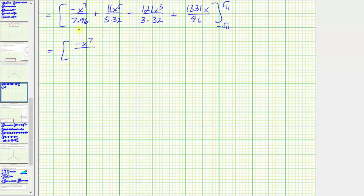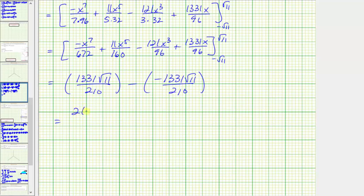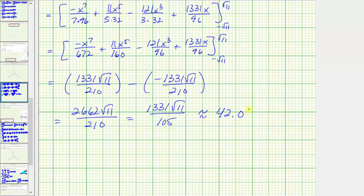I'm not going to show all these steps here. But when we substitute square root of 11 for x, we end up getting 1331 times the square root of 11 all divided by 210. Then minus when x is equal to negative square root of 11, we end up getting negative 1331 times the square root of 11 divided by 210. This gives us 2662 square root of 11 all over 210, which has a common factor of two, simplifying perfectly to 1331 square root of 11 all divided by 105, which as a decimal is approximately 42.0422. So this would be the exact and approximate value of the triple integral.